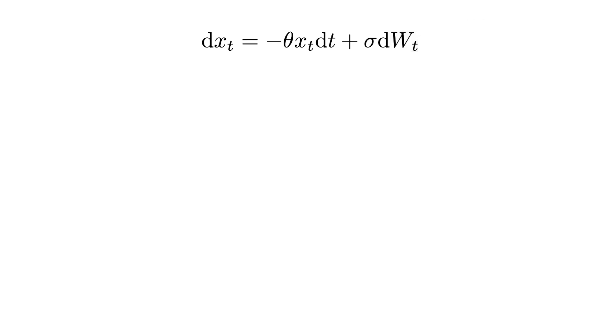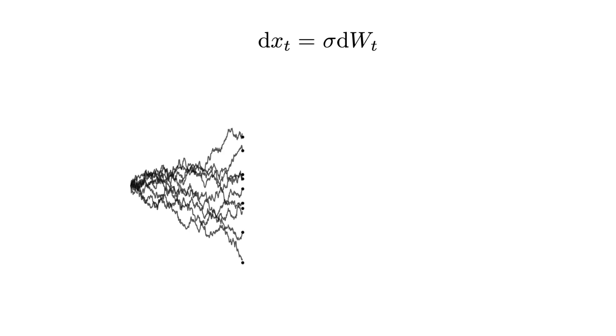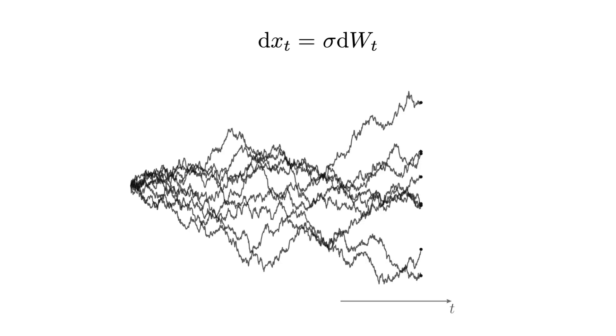Without the first term, which I will discuss shortly, the process with the second term only would correspond to diffusion, with the parameter sigma controlling the diffusion rate. In this case, the random variable x fluctuates without bounds and its spread grows in time.